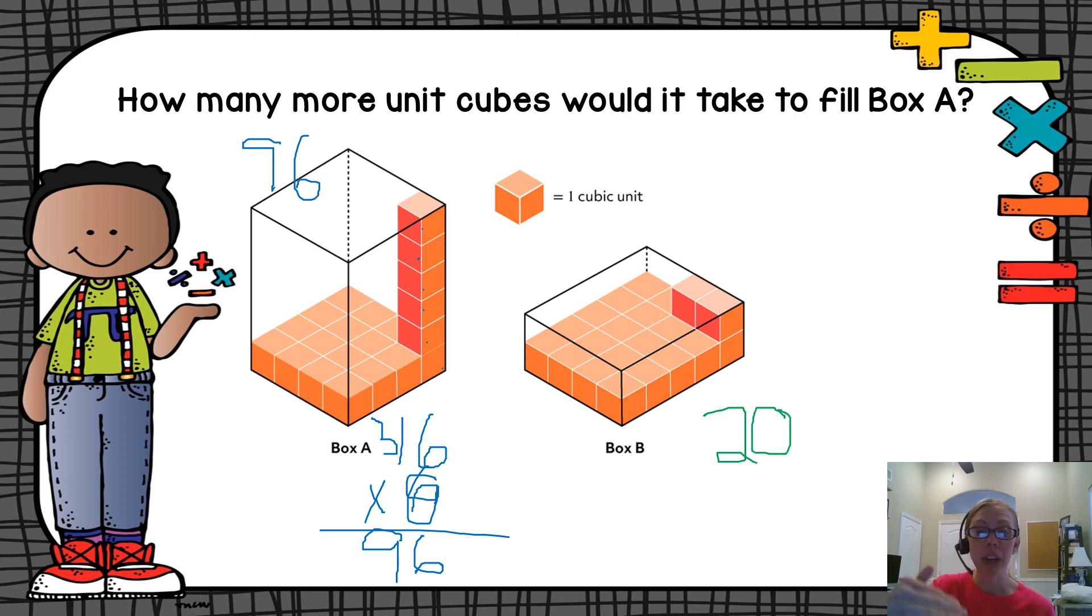Box B only has two layers, so 20 times 2, I know, is 40 cubes.